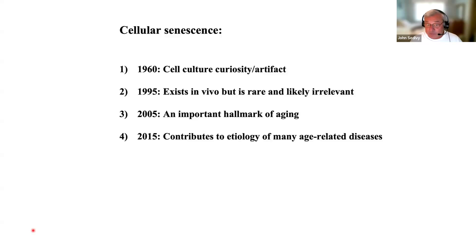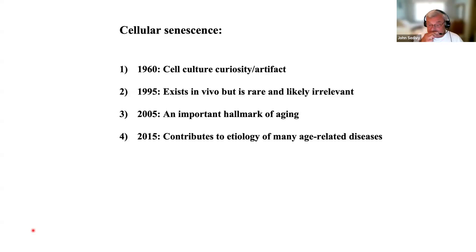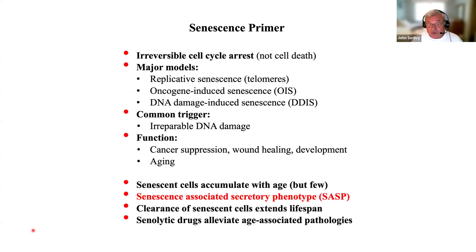Initially, most people felt it was a cell culture artifact. Then data started accumulating that cellular senescence probably does exist in vivo, but it's probably rare and irrelevant. Then it seemed to become an important hallmark of aging, at least in terms of correlations. And most recently, mostly due to mouse studies, it became quite clear that it actually functionally contributes to many age-related diseases.